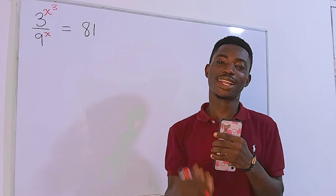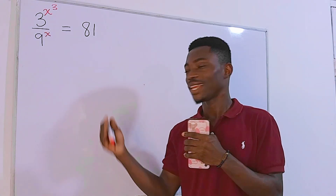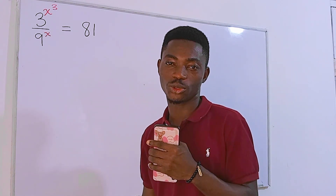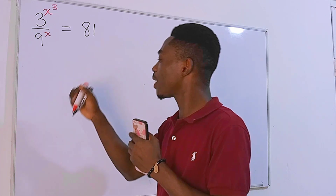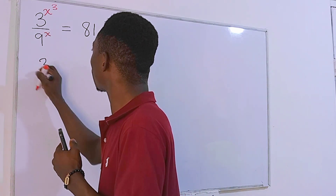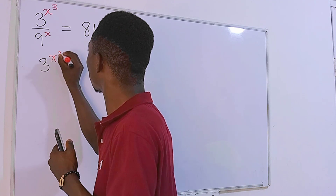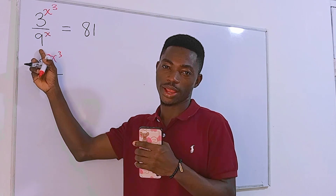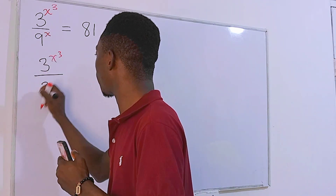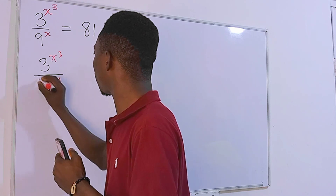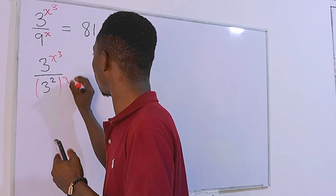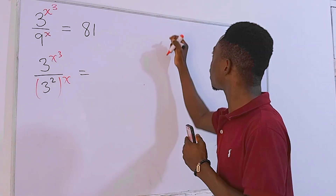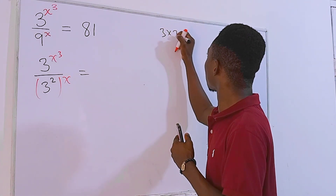On the left-hand side of the equation we have a fraction. I'll keep the numerator side which is 3 to the power x cubed, then divided by — I'll rewrite this 9 as 3 to the second power, all to the power x. And on the right side, 81 is the same as 3 times 3...